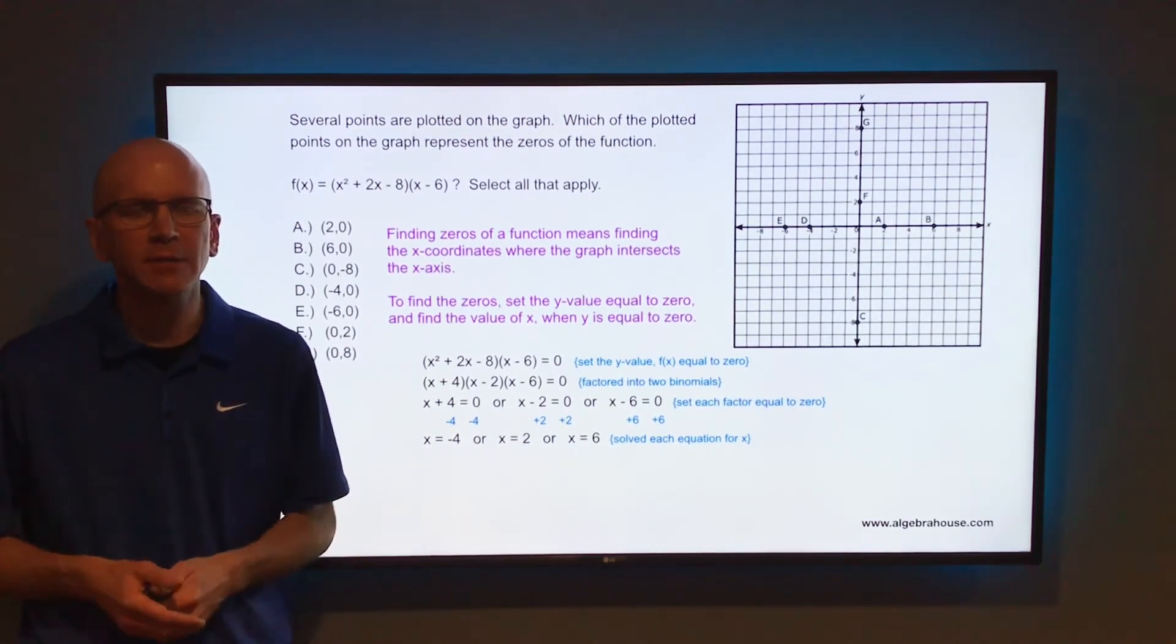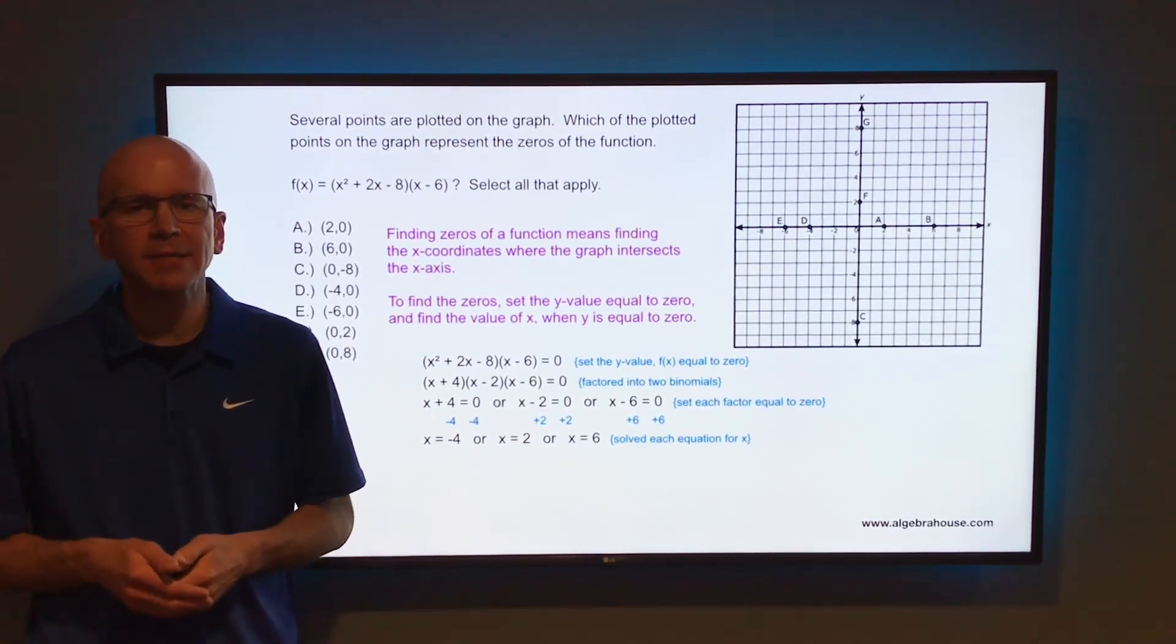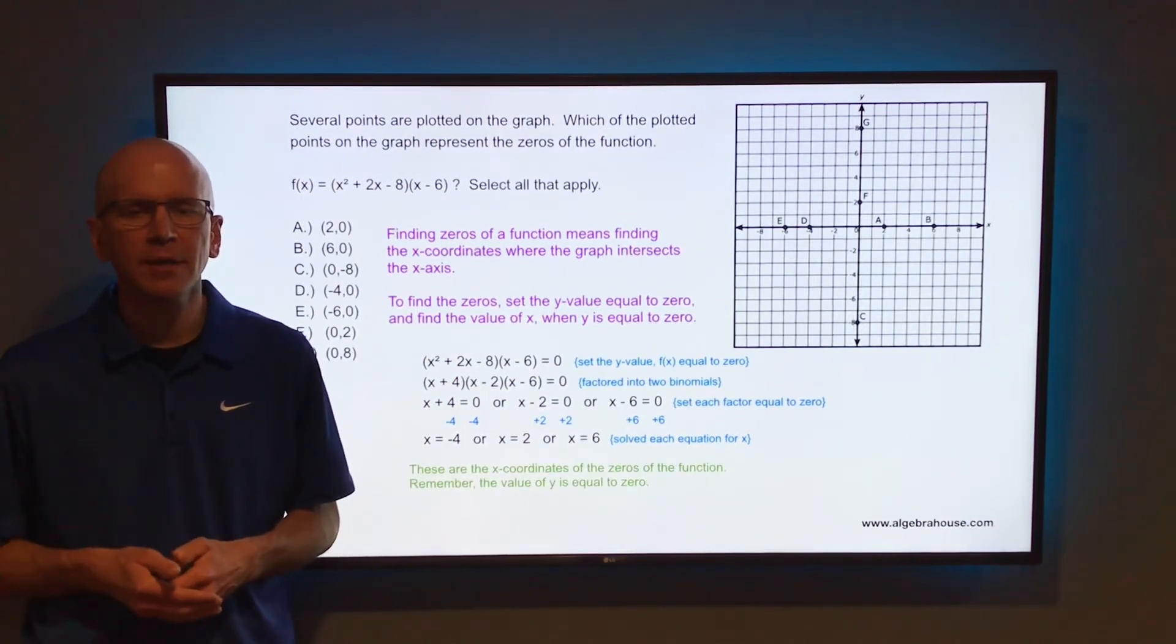So those are the x-intercepts. That's where the graph hits the x-axis. That's where the value of y is equal to zero. Those are called the zeros of a function.